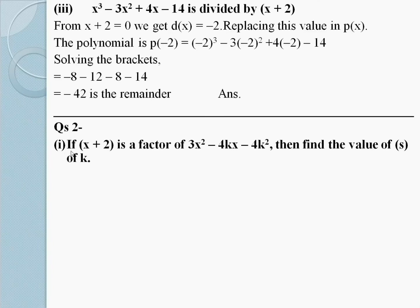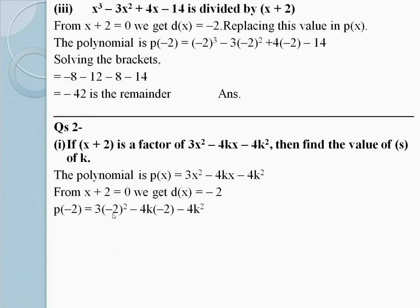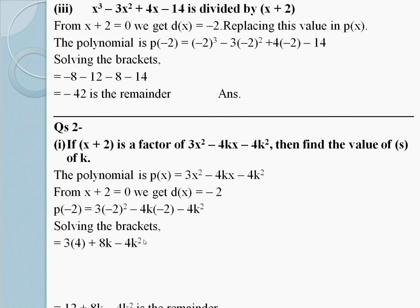Question number 2: If x + 2 is a factor of 3x² - 4kx - 4k², then find the value of k. The polynomial is P(x) = 3x² - 4kx - 4k². From x + 2 = 0, we get x = -2. P(-2) = 3(-2)² - 4k(-2) - 4k². Solving the brackets: 3(4) + 8k - 4k² = 12 + 8k - 4k² is the remainder.